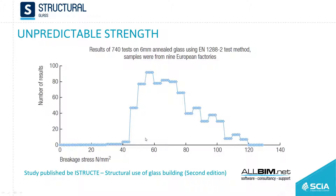Here is a study made by the Institute of Structural Engineers in the UK, where they analyzed 740 test results on 6 mm annealed glass and got very different results — from 40 MPa to 120 MPa. This leads to quite high safety factors, because we need to be in the safe area while still maintaining some economic margins.